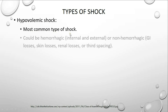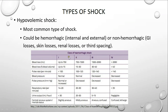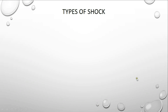Hypovolemic shock is the most common type of shock. It can be classified into hemorrhagic shock and non-hemorrhagic shock. Hemorrhagic shock can be either internal or external. Non-hemorrhagic shock is due to GI losses such as vomiting and diarrhea, skin losses such as excessive sweating, renal losses, or third spacing — all resulting in dehydration. Hypovolemic shock has four classes classified according to blood loss, blood pressure, respiratory rate, and urine output.